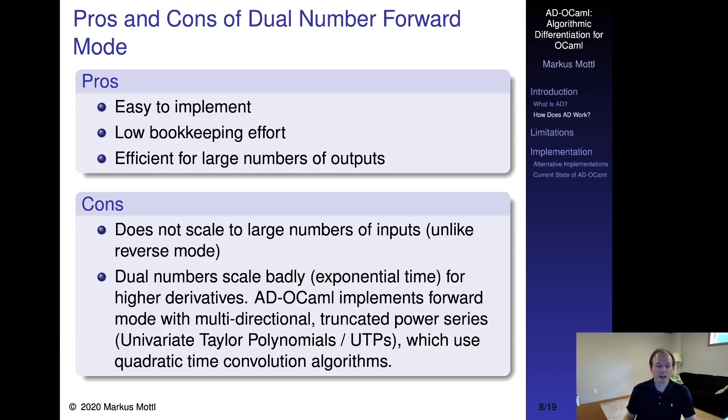Furthermore, each time we take derivatives by nesting dual algebras with the make-dual functor, the computational effort grows exponentially for obtaining higher-order derivatives. That's why AD-OCaml implements forward mode using a UTP functor. This functor generates algebras over univariate Taylor polynomials. These are essentially truncated power series. AD-OCaml uses convolution algorithms on UTPs that run in quadratic time to obtain high-order power series approximations of programs.